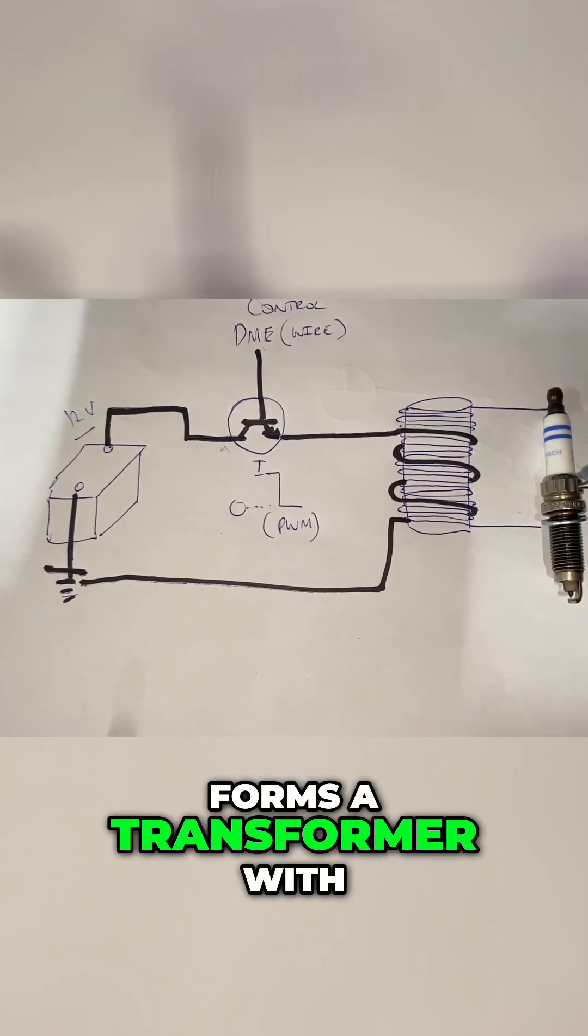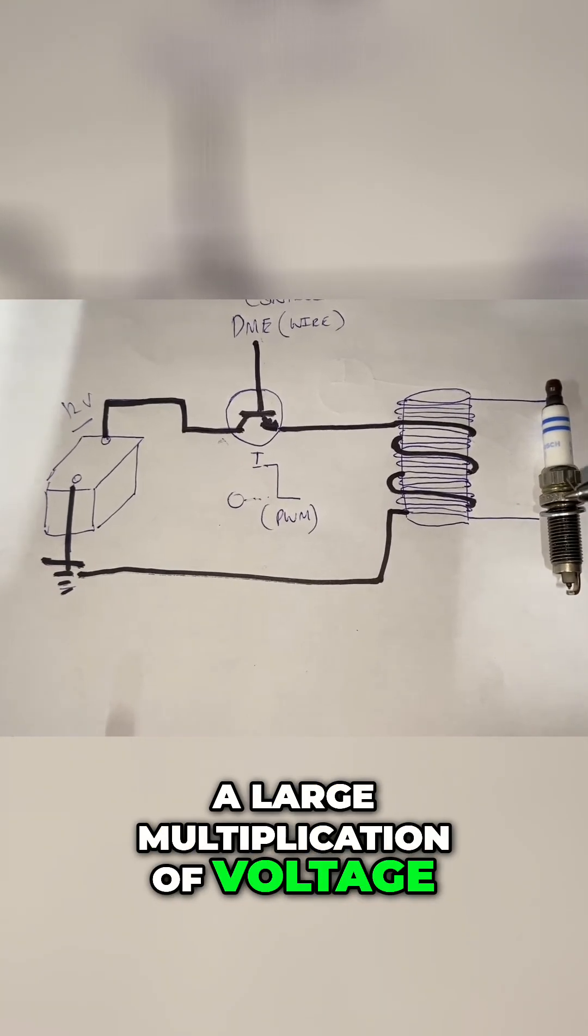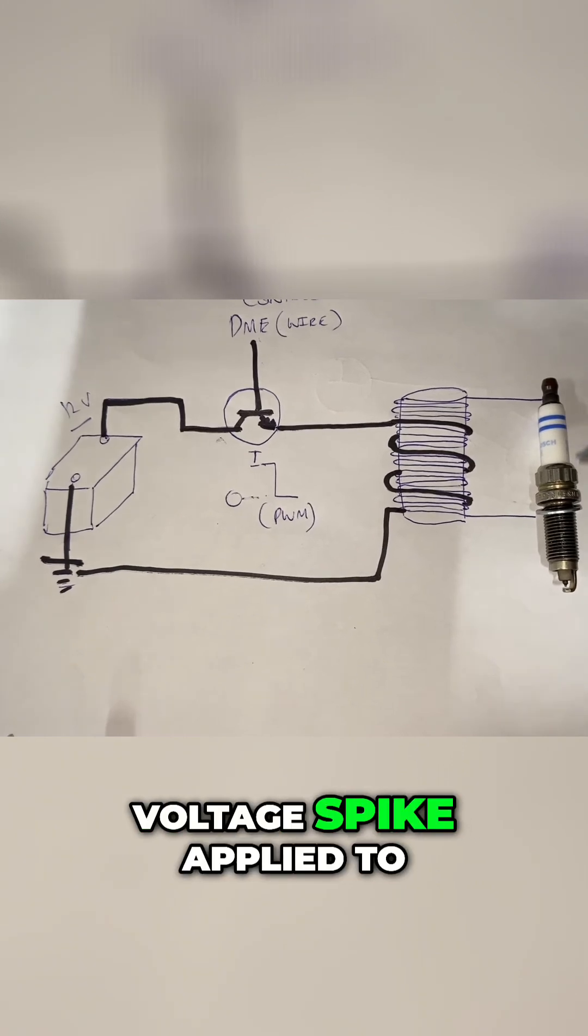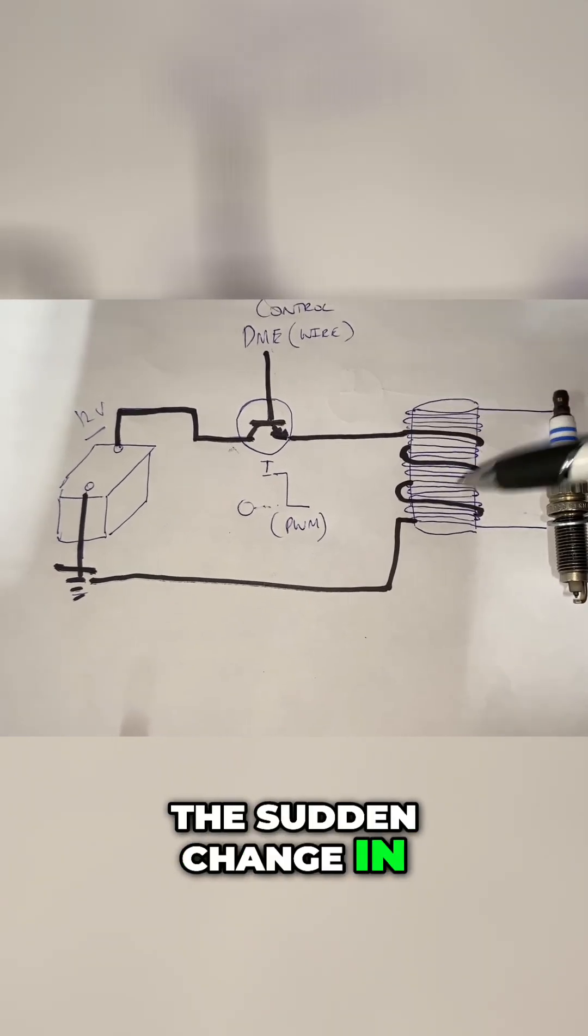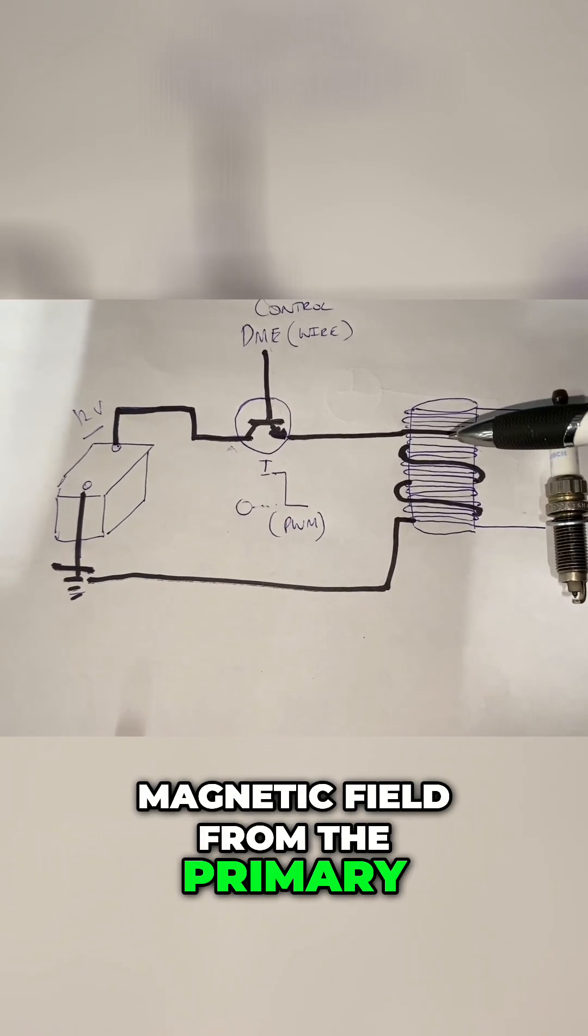That forms a transformer with a large multiplication of voltage, you see. It's a larger voltage spike applied to the spark plug. The sudden change in magnetic field from the primary...